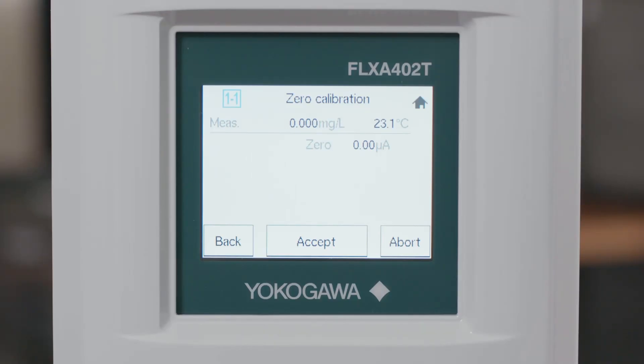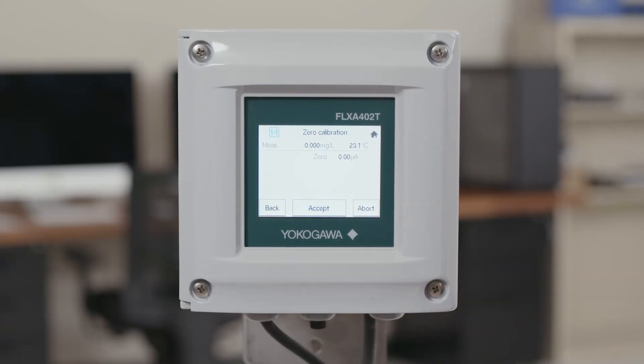On this screen you'll see back, accept, and abort. Back will take you to the previous step. Accept will accept the calibration and save it. If you don't hit accept it will not save the calibration. Hitting abort will go back to the calibration menu without saving anything. Once you hit accept your zero calibration is done and we can move on to a span calibration.